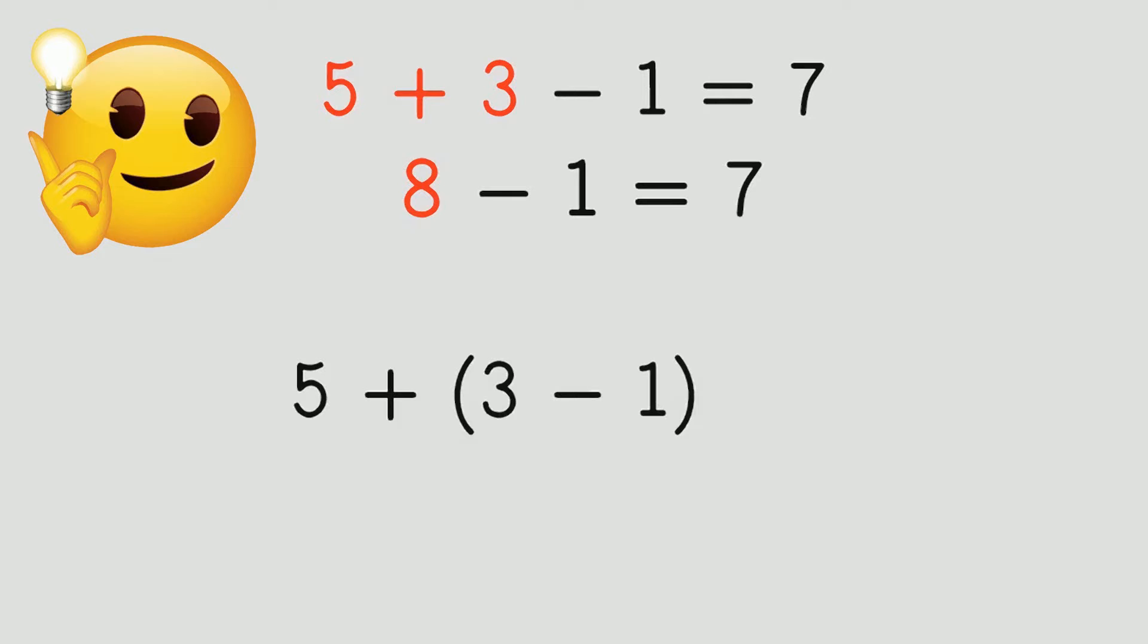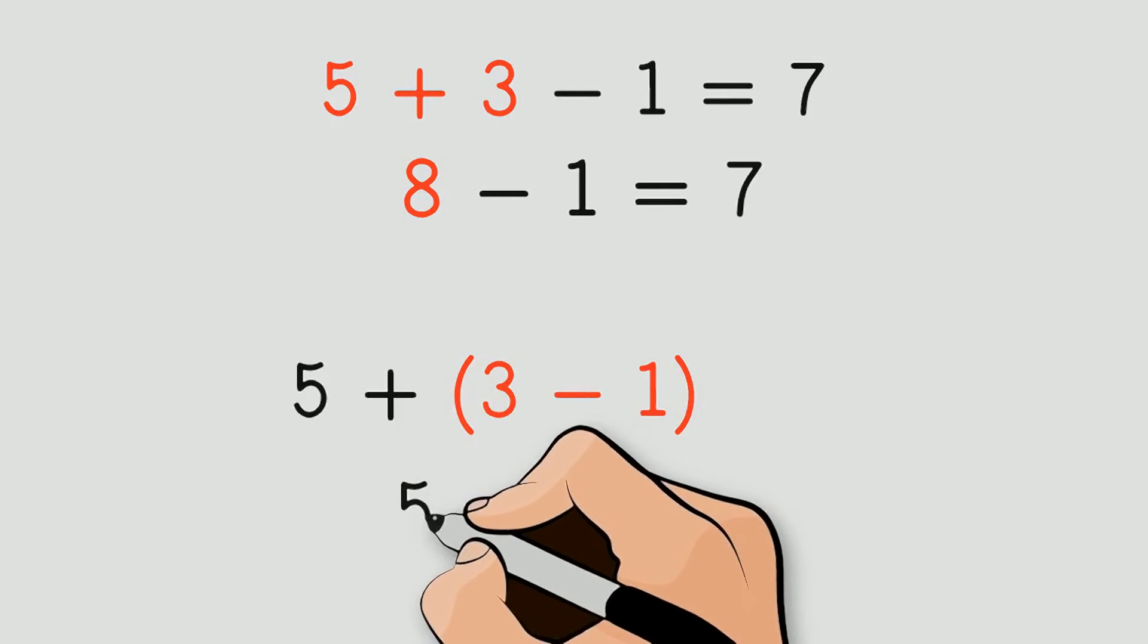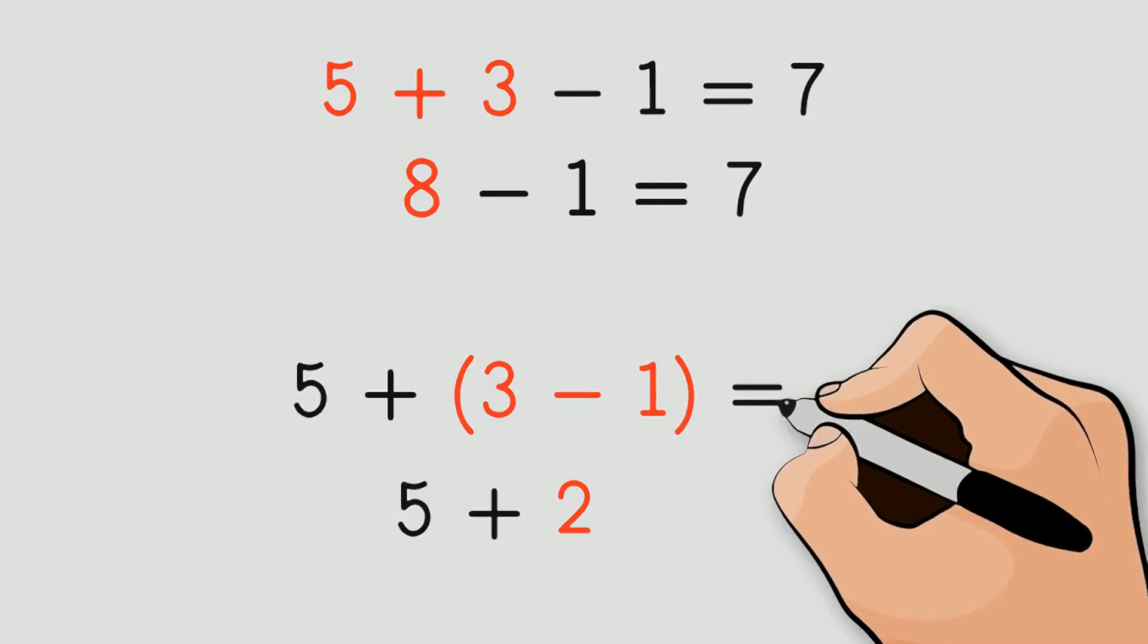That's right. It means that first we have to solve the subtraction. 3 minus 1 gives us 2. And now we add the 5, which gives us 7.